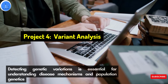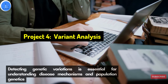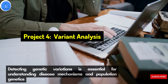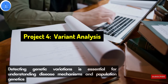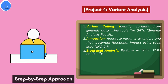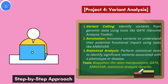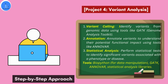Project four is variant analysis. This project detects genetic variation, which is essential for understanding diseases like cancer and their mechanisms, as well as population genetics. Required tools include BioPython and ANNOVAR or statistical analysis libraries. Steps include: variant calling — identify variants from genomic data using tools like the Genome Analysis Toolkit. Next, annotation — annotate the variants to understand their potential functional impact using tools like ANNOVAR. Then statistical analysis — perform statistical tests to identify significant variants associated with a phenotype or disease.